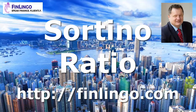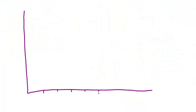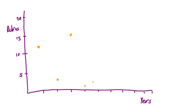Hello and welcome to a look at the Sortino Ratio with me Andy Duncan here at finlingo.com. The Sortino Ratio is a refined version of the more widely known Sharpe Ratio. Back in 1959 when Henry Markowitz developed his modern portfolio theory, even he said that downside deviation was more important than total price deviation. Investors welcome upside deviation and only really dislike downside deviation.